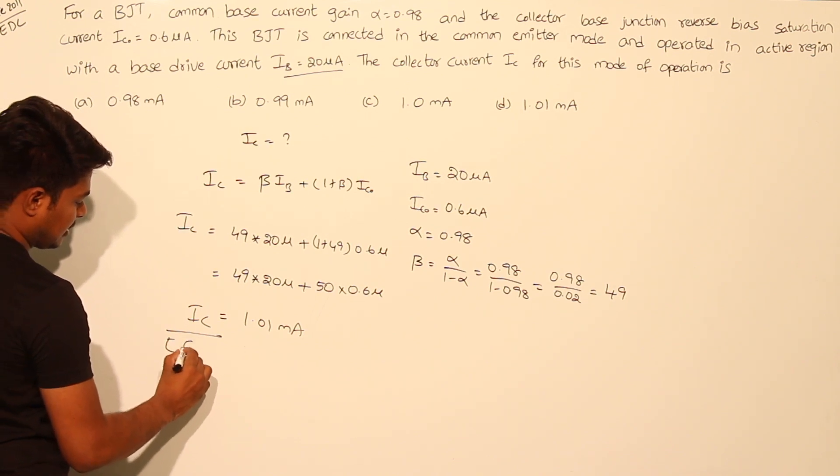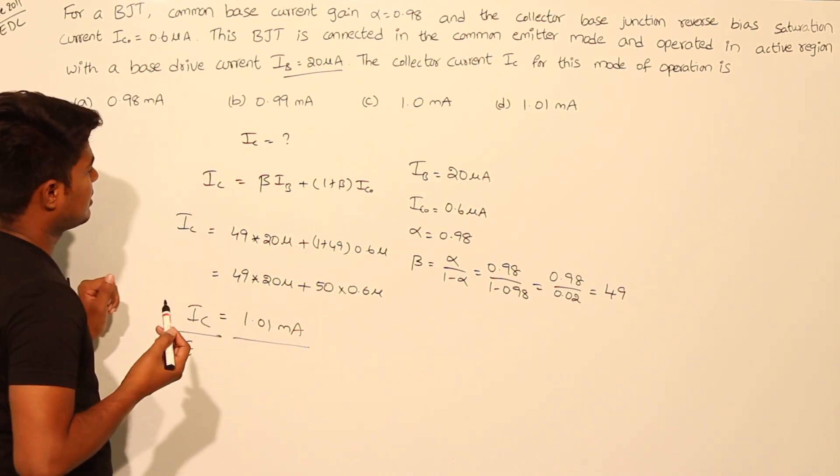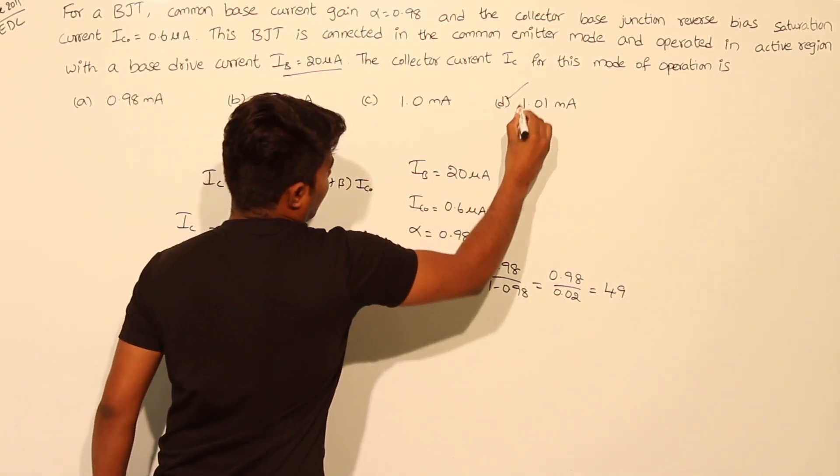In the options it is option D. Option D, 1.01 milliamperes is the correct answer.